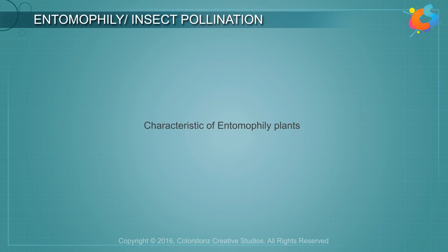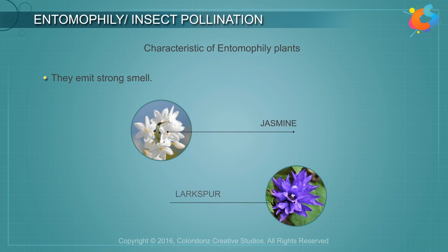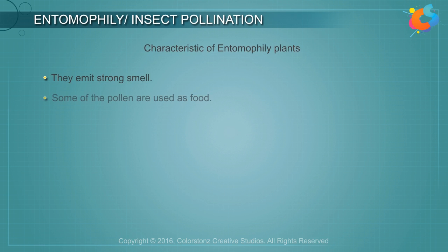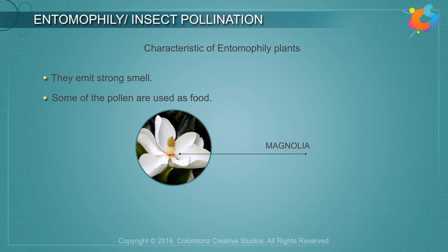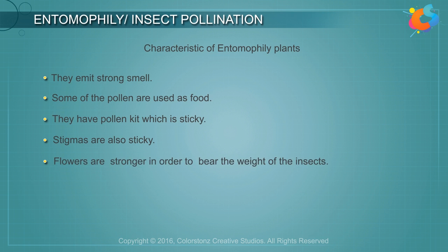Characteristics of entomophily plants: They emit a strong smell — for example, jasmine and larkspur. Some of the pollen is used as food, for example by magnolia. They have a pollen kit which is sticky. Stigmas are also sticky. Flowers are strong in order to bear the weight of the insects.